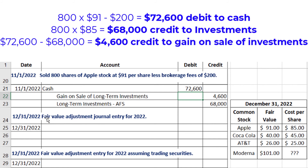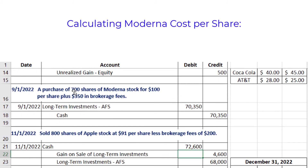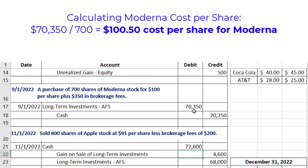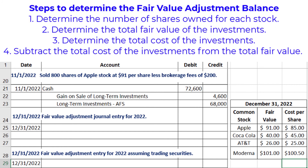On the last day of 2022, we need to make the fair value adjustment journal entry. We are given the fair value of all the stocks we own and the cost per share. For Moderna, we need to calculate the cost per share by taking the $70,350 we paid divided by 700 shares, giving us a cost per share of $100.50. To find the fair value adjustment, we go through the same process: find the number of shares of each stock we own, find the total fair value, then the total cost, and subtract to find the desired balance in the fair value adjustment account.